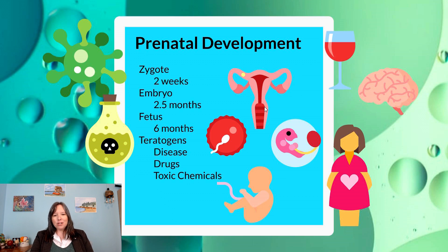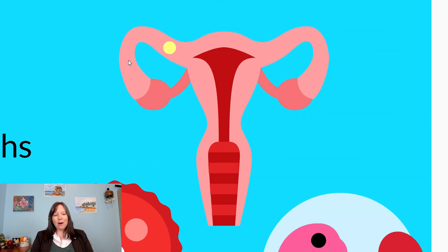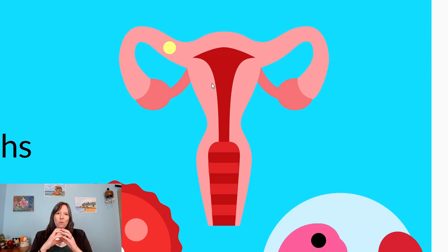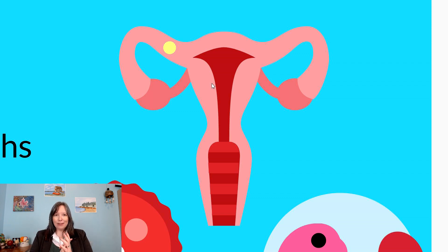During the two weeks of the period of the zygote, the zygote starts off as one cell, then splits into two, then four, then eight, then 16, then 32. About five days after fertilization, the zygote reaches the end of the fallopian tube and enters the uterus. Around day seven, it starts to attach to the uterine wall lining and begins to implant. This is when there is a blood exchange between the zygote and the parent, and the parent's body may realize there is a pregnancy.